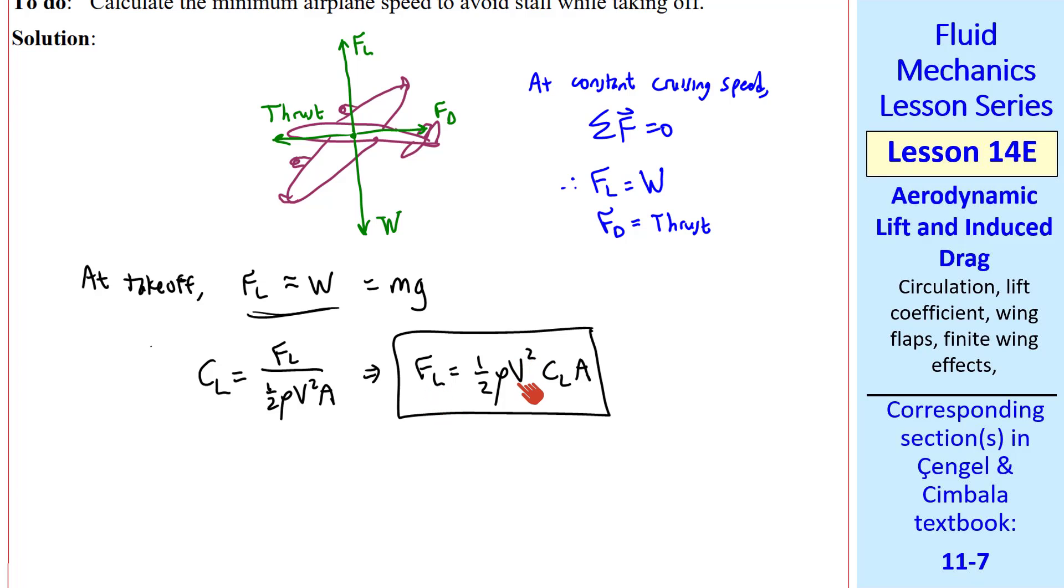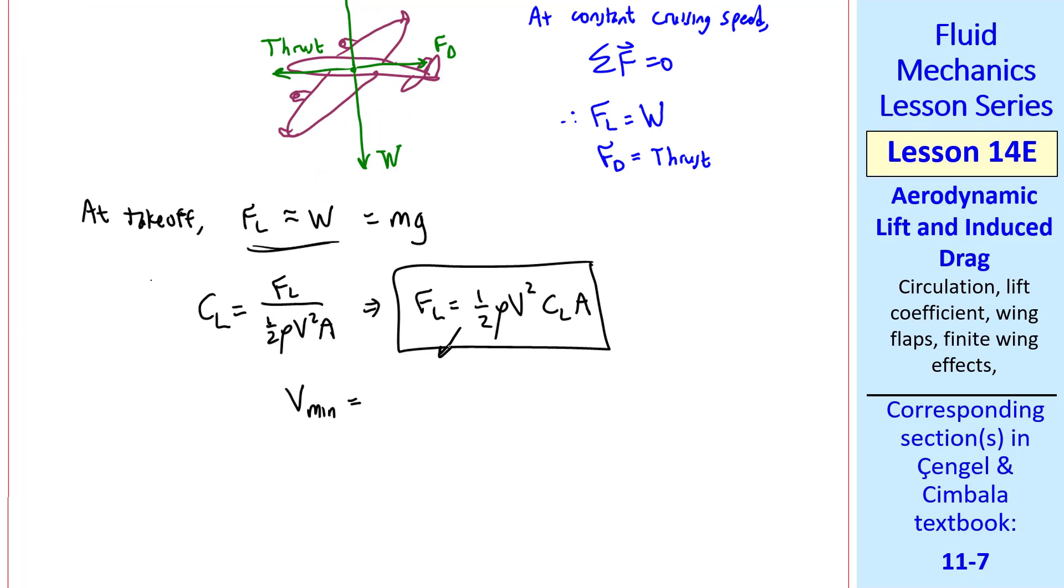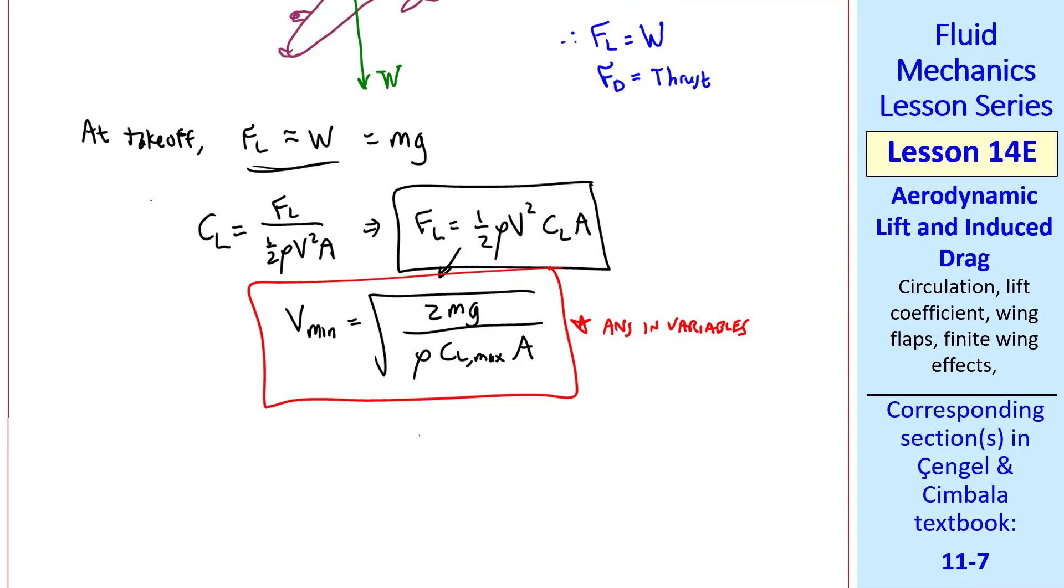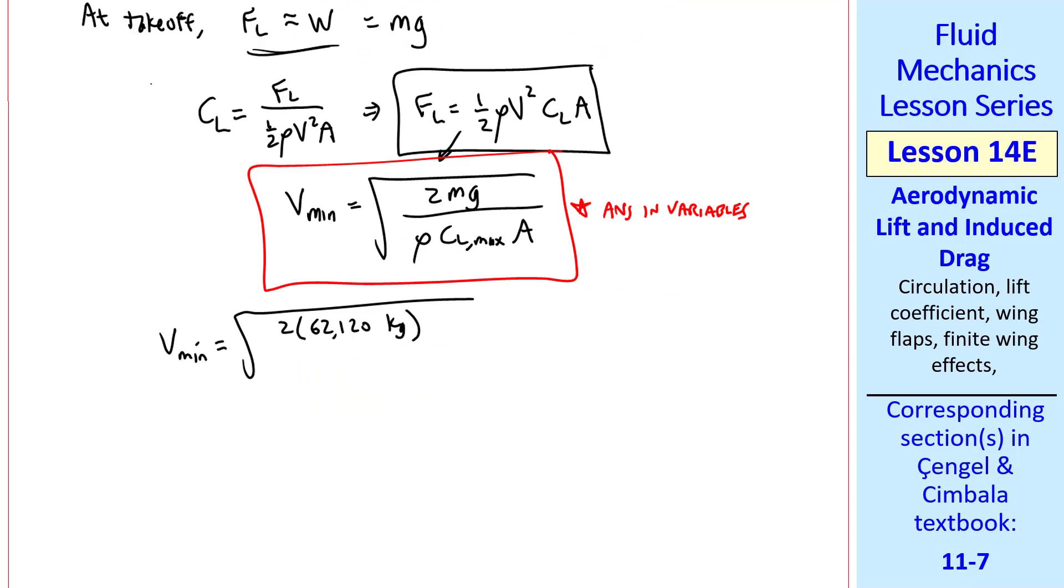In this case, we're given a maximum CL. So we want to calculate the minimum speed v to achieve this required lift, which is mg. We solve this for v and call it vmin. We get the square root of 2 mg over rho CL max A. This is our answer in variables, and so we plug in the numbers. 2 times m times g divided by density, our given maximum CL, and our given planform area.